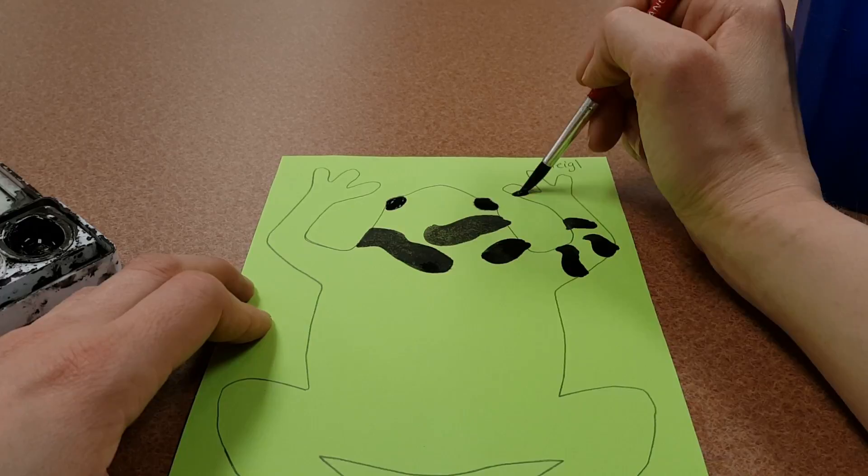And once you have black on every main part of your frog's body, you know, arms, hands, legs, feet, his back, then he needs to go on the drying rack to dry.